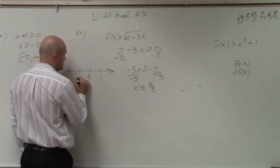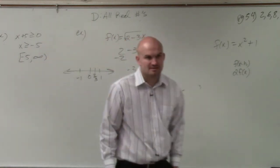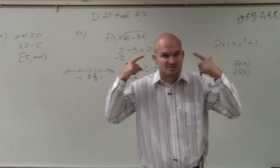So if here's 1, here's negative 1. 2 thirds is between 0 and 1, correct? So let's just make sure this makes sense.